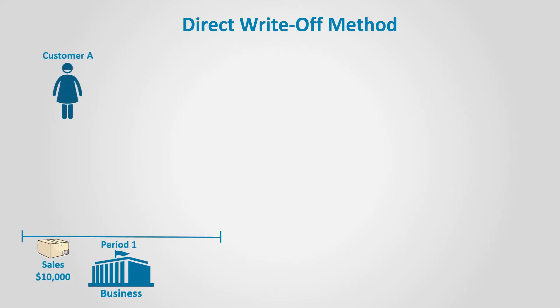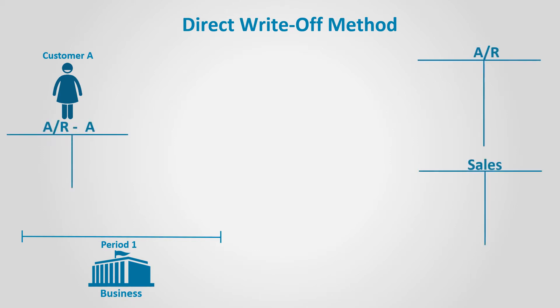Let's illustrate the direct write-off method. According to the direct write-off method, bad debts expense is recorded and the accounts receivable is closed when a customer defaults. Assume that a company makes a sale to Customer A for $10,000. The accounts receivable of Customer A in the accounts receivable subsidiary ledger will be debited together with the general accounts receivable account, and the sales revenue account will be credited for the same amount.